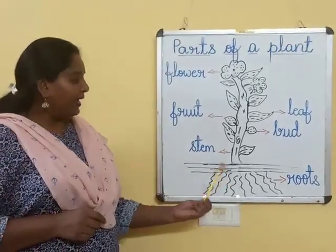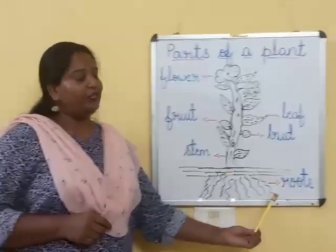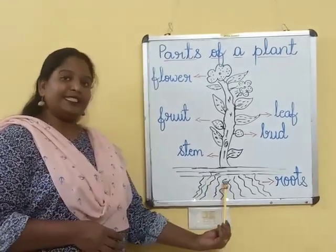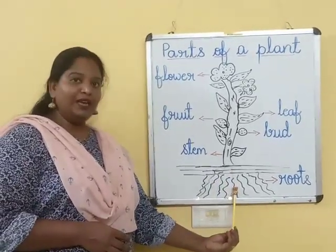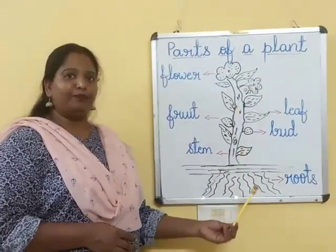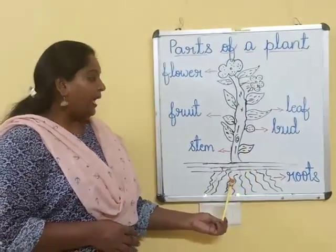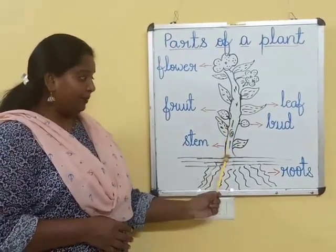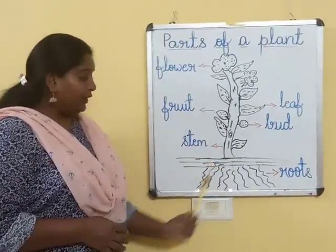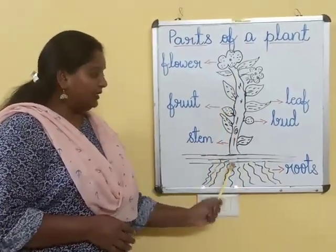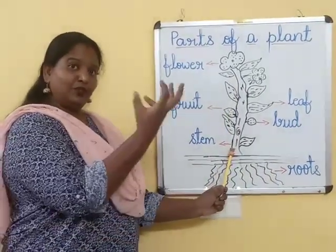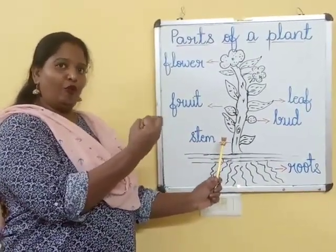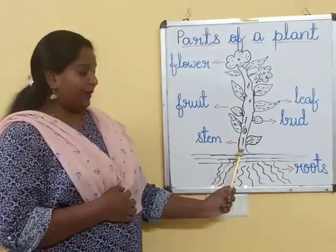Now as you see here, these are called roots. Roots are under the soil. Roots take water from the ground and supply it to various parts of the plant, which help it to grow. Now the root also holds the stem. The roots under the soil supply water and hold the stem to stay strong on the ground — it does not help it to move or break.